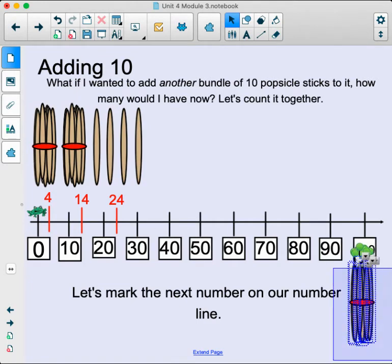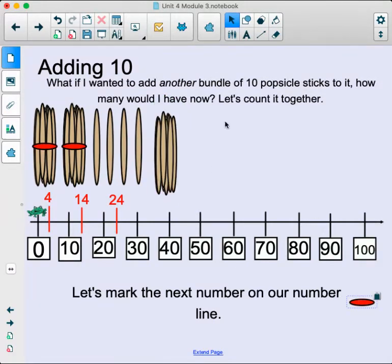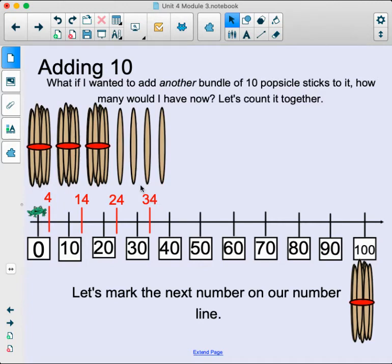We have to add one more bundle. Okay, and we know it's going to always get left behind. That's okay. If we added this bundle, we would be at 34. We have 3 bundles of 10 and 4 single popsicle sticks.